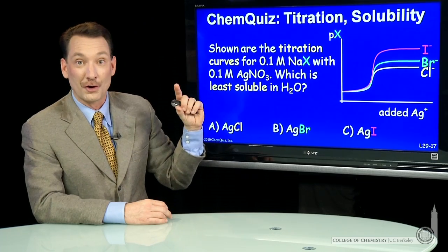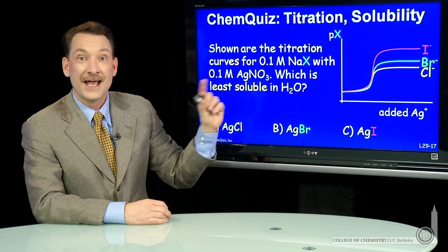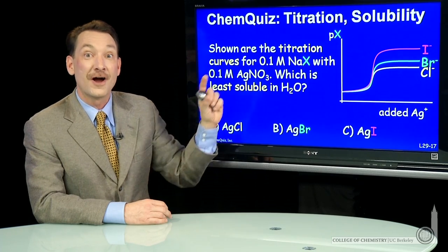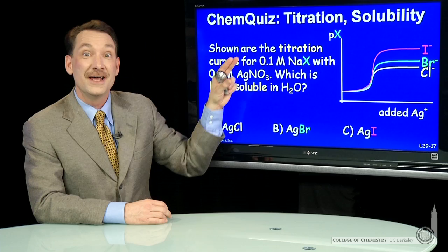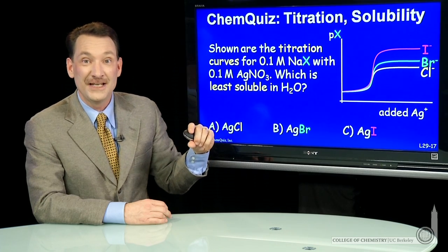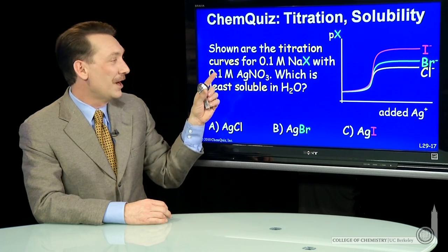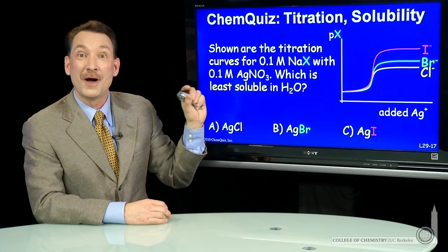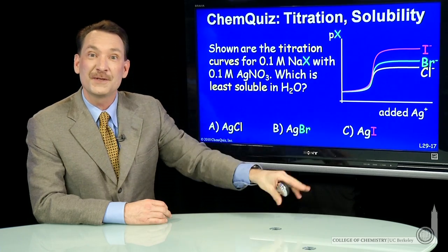Now, silver chloride, silver iodide, and silver bromide are low solubility salts. They have a very small KSP value. So silver chloride, silver bromide, and silver iodide will precipitate out of solution.